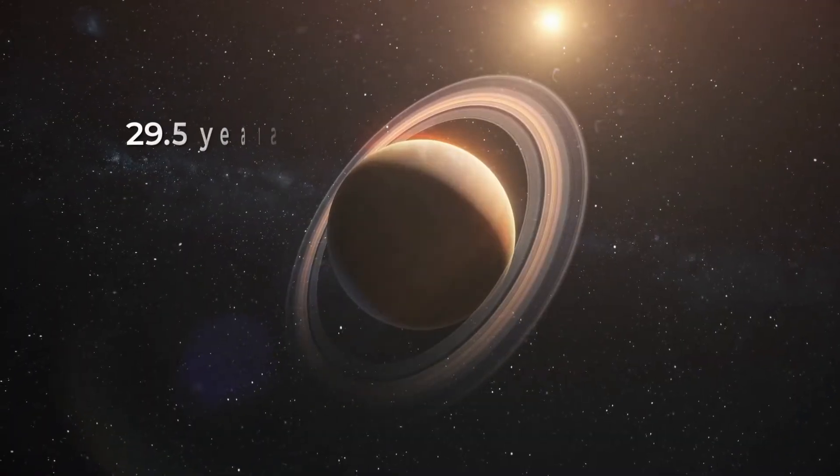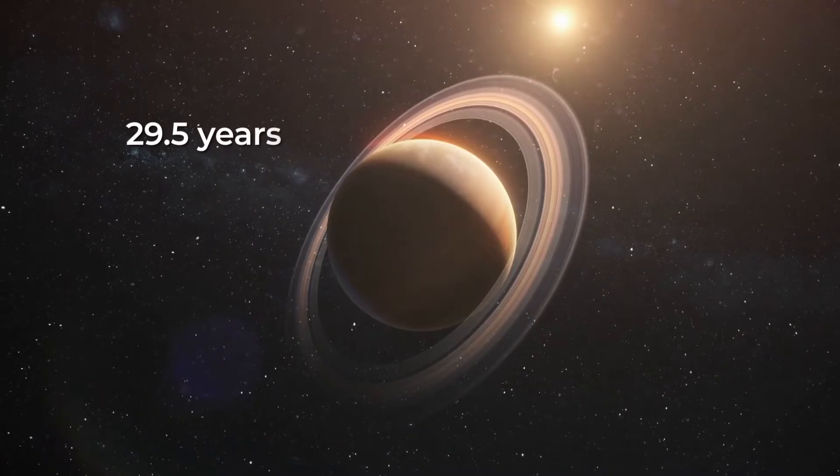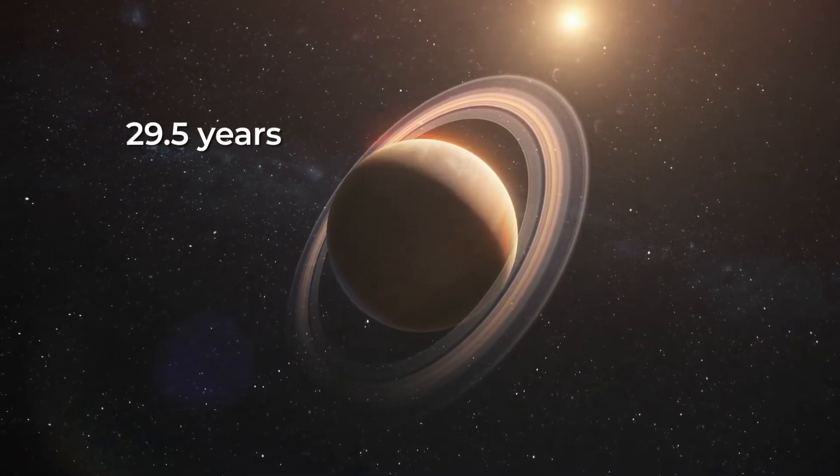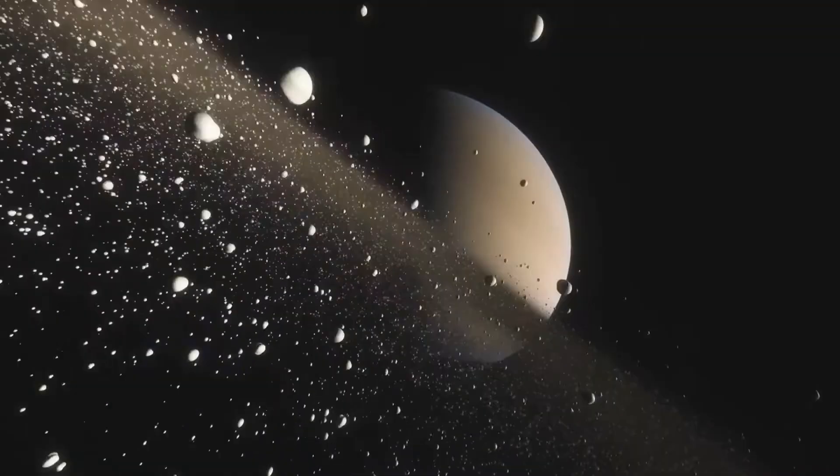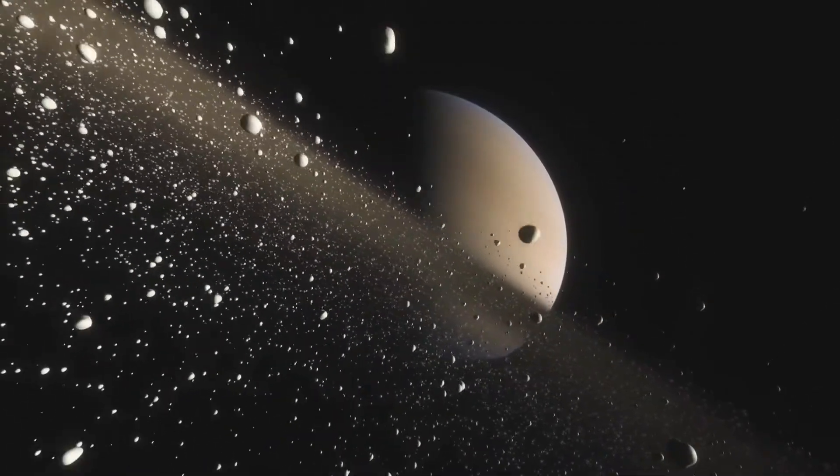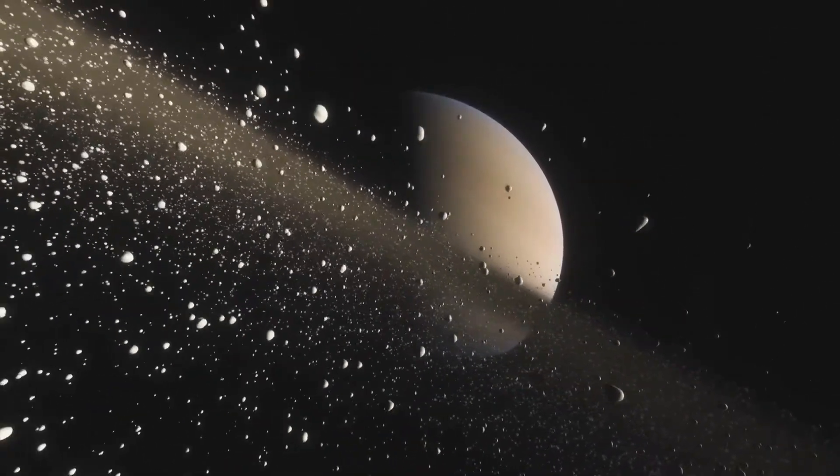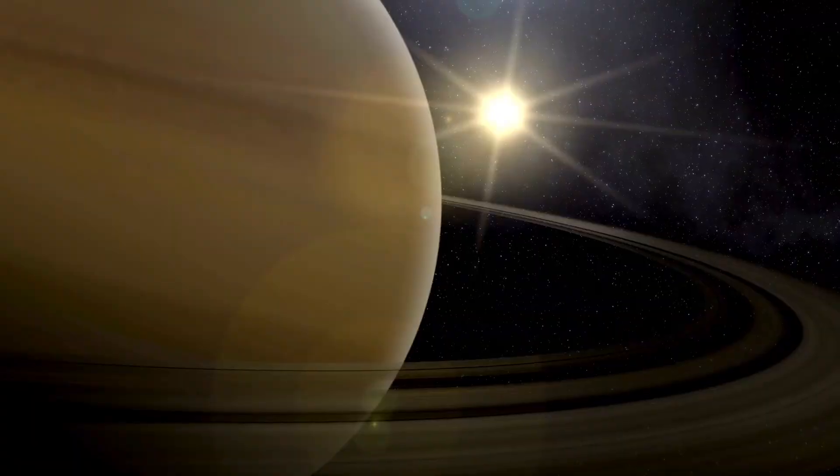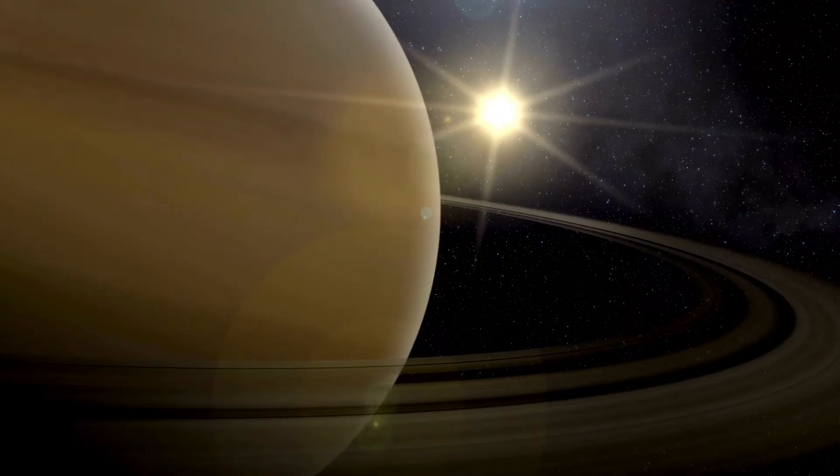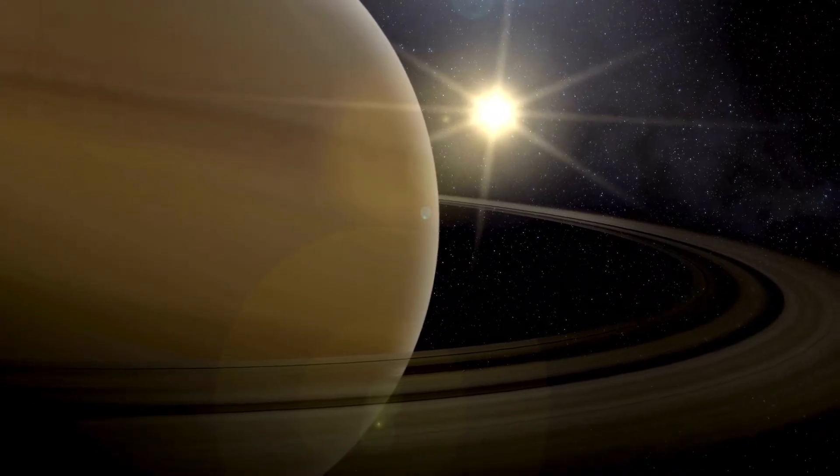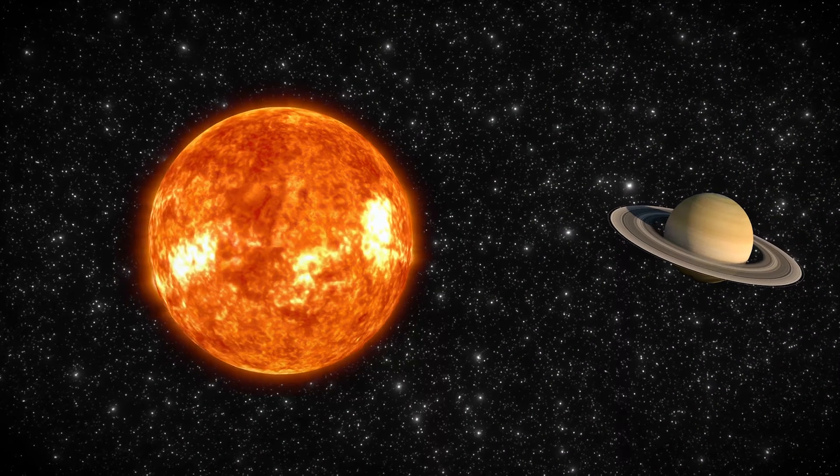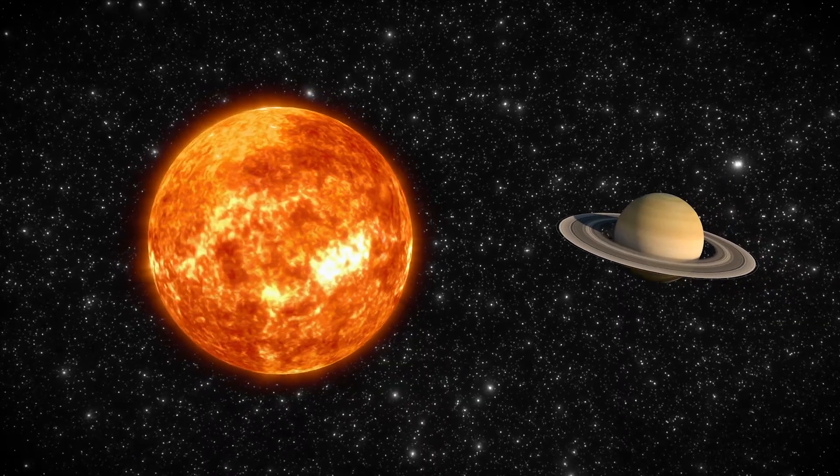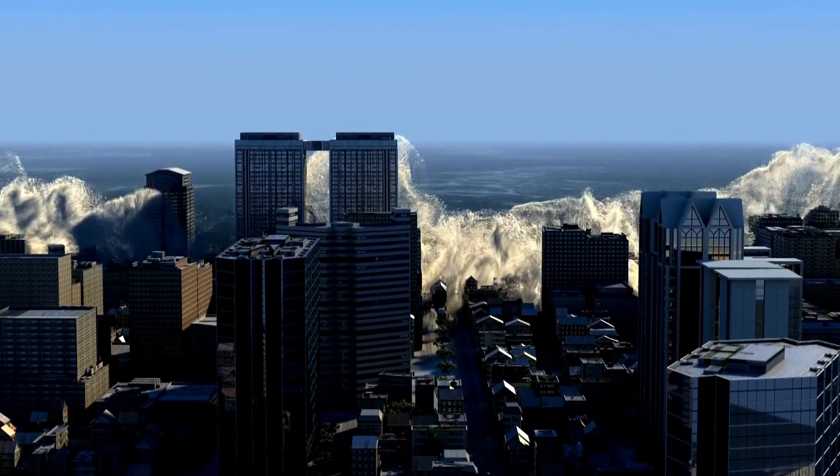Then we have Saturn. This planet has an orbit of 29.5 years, that is, it moves much faster than Uranus and Neptune, and therefore the influence of a massive object such as a brown dwarf could quickly push it as far into the solar system as outward. If Saturn moves away from the Sun like Uranus and Neptune, it will have longer years, but nothing else will happen. On the other hand, if it gets a little closer to the Sun, the consequences would be catastrophic.